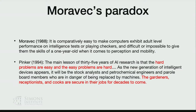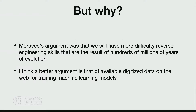We need to get underneath this. Moravec's original argument was that what we are trying to do in AI is reverse engineering, and the abilities which are much older in evolution will be harder to reverse engineer. But that was the paradigm decades ago, not today. The paradigm today is that we are not relying on our ingenuity — we are relying on data. The data has the ingenuity. So the question must be about what data is available.